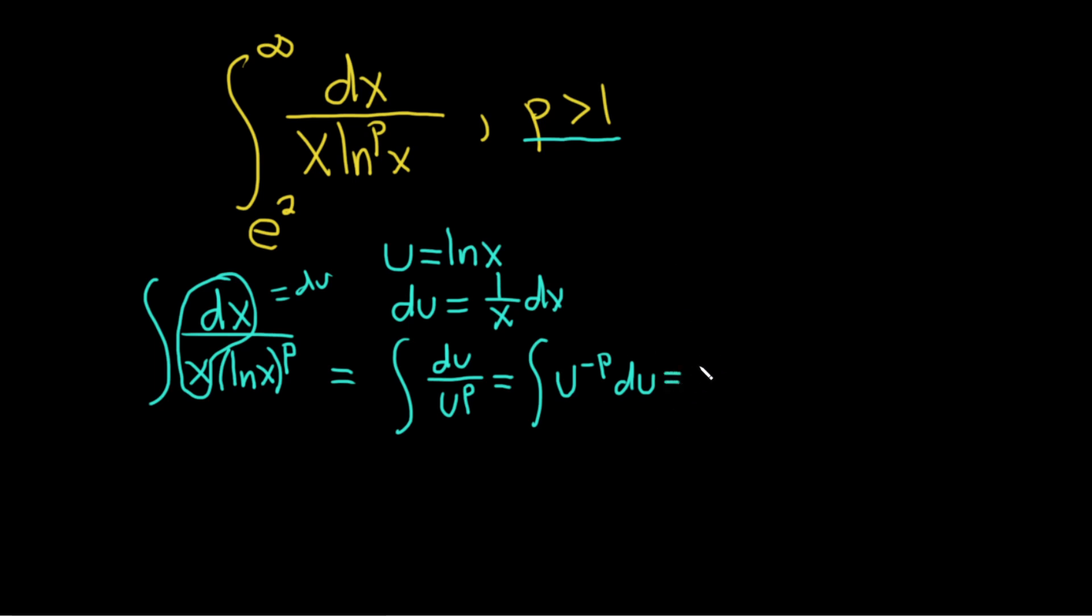So this is equal to u to the... You just add 1. And then you divide by the same result. And then plus a constant of integration, which we will omit when we do the improper one because there will be a definite integral at that point in the problem. So we're not quite done yet. Let's rewrite this a nicer way. This is equal to... Let me write it like this. u to the 1 minus p, same thing, over 1 minus p plus c.